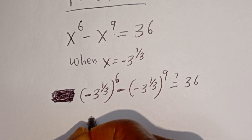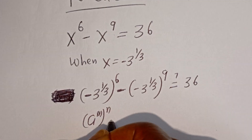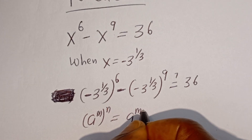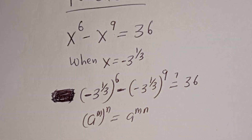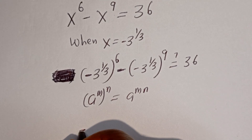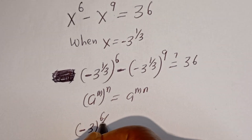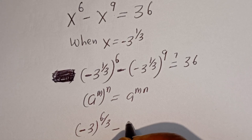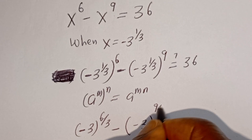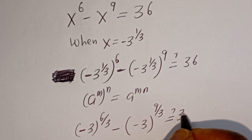Taking note that a to the power of m, to the power of n, equals a to the power of mn. This can be written as minus 3 to the power of 6 over 3, minus minus 3 to the power of 9 over 3, must equal 36.